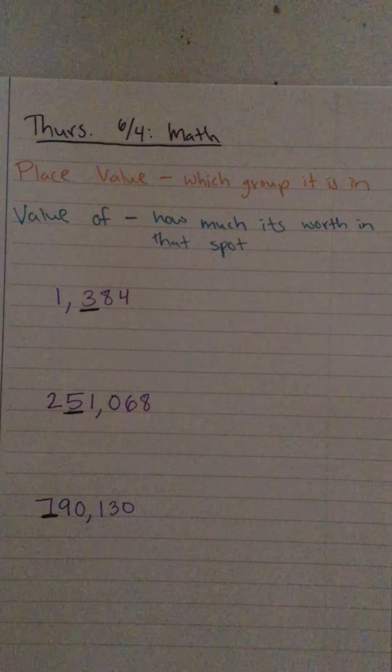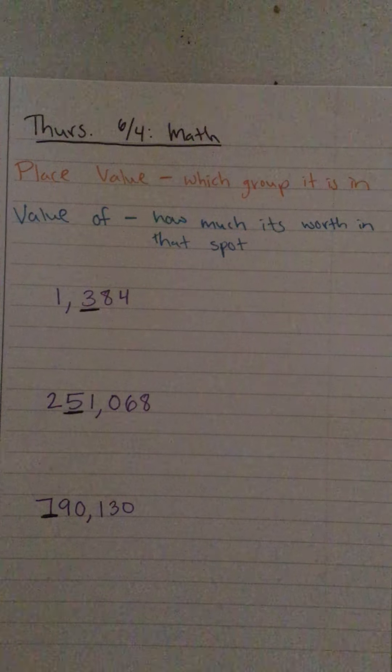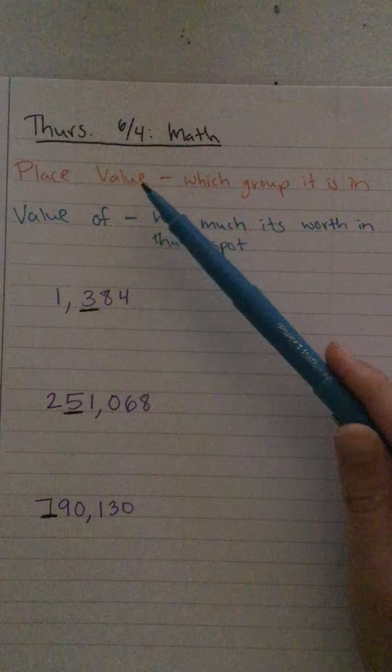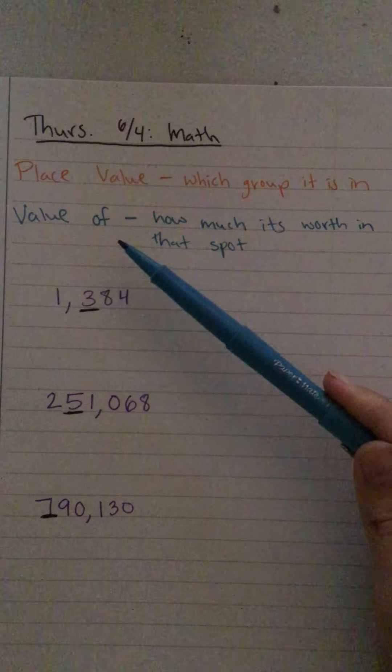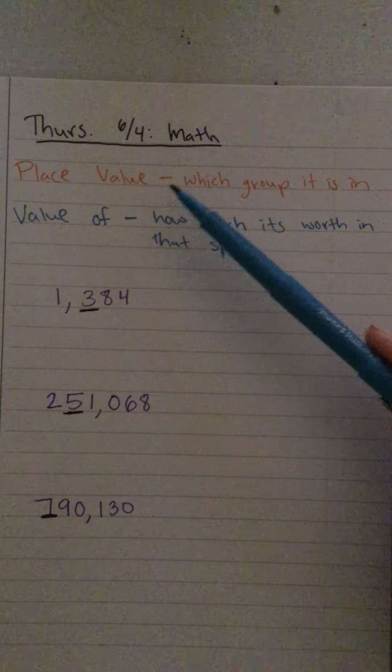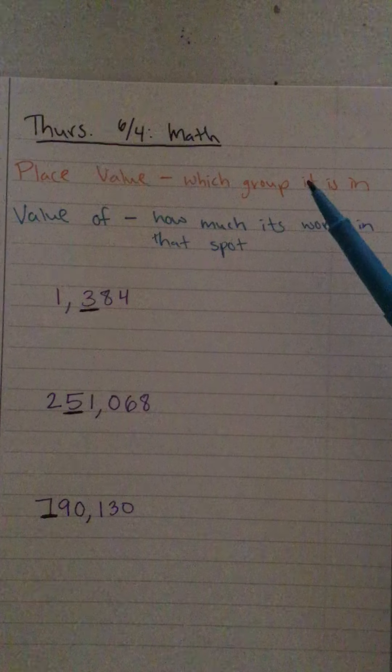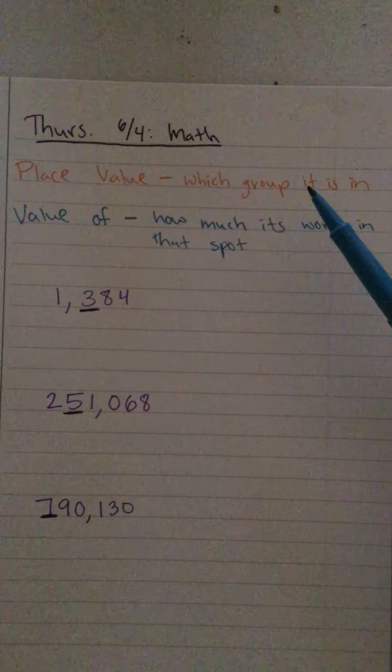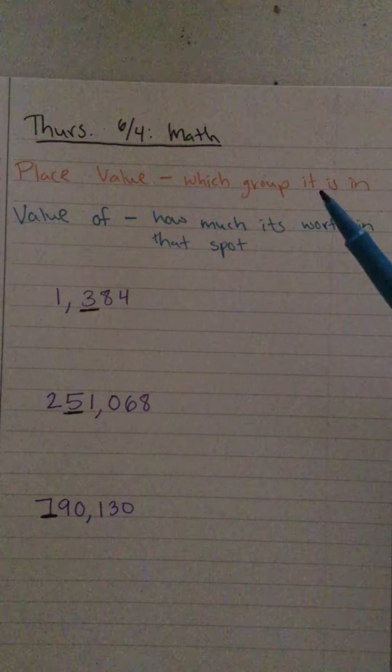Okay friends, we are going to learn the difference between place value and value of. The place value is which group it is in - which group that digit is in, like ones, tens, hundreds, thousands.